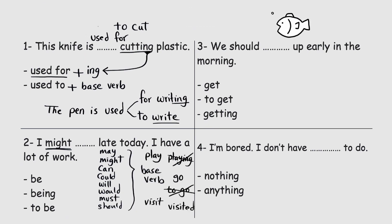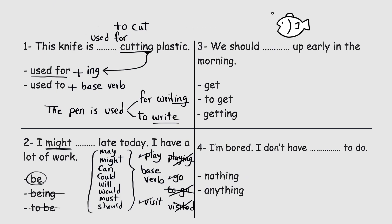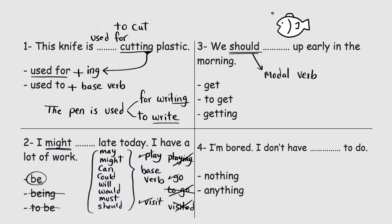Visit, not visited — these are the base verbs we use after modal verbs. So the answer is 'be', not 'being', not 'to be'. Now you answer this one: we should blank up early in the morning — 'get' or 'getting'? Remember that 'should' is a modal verb. What's the answer? Let me know in the comments.